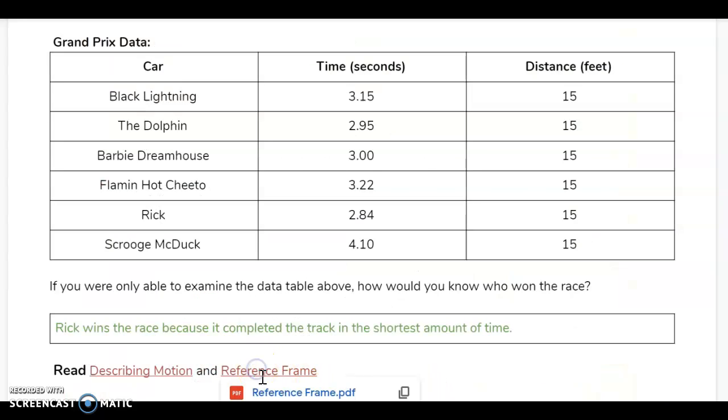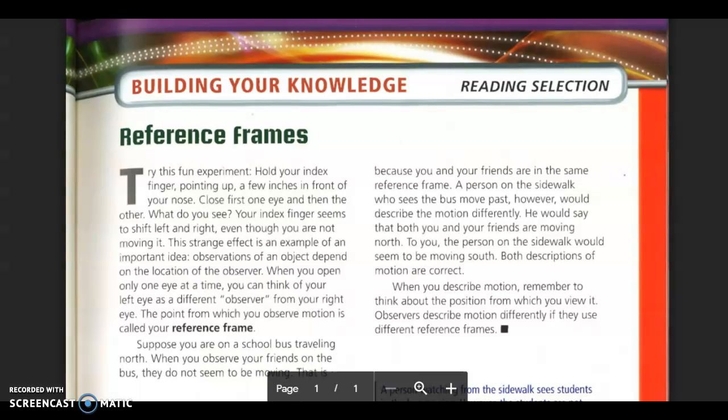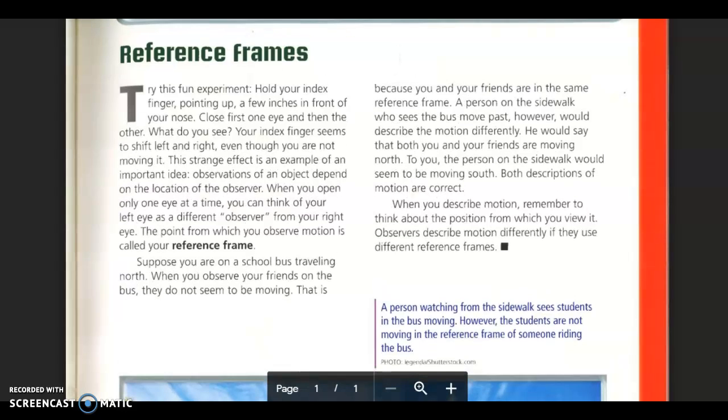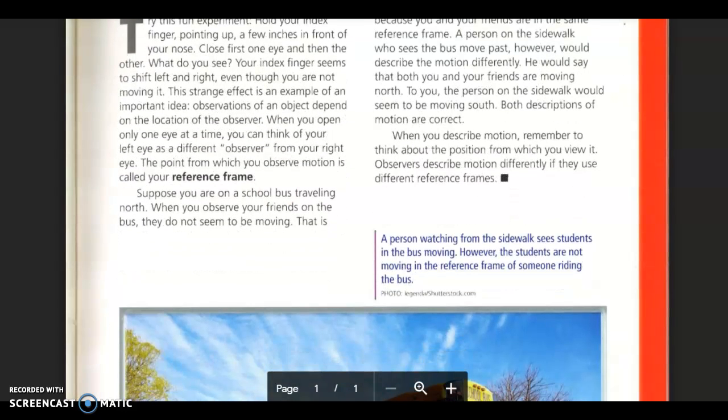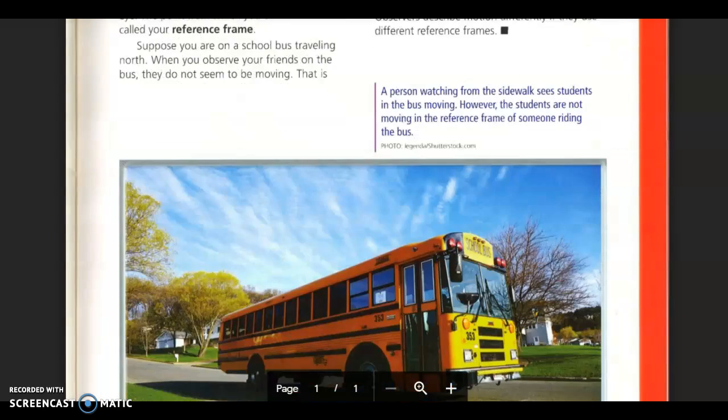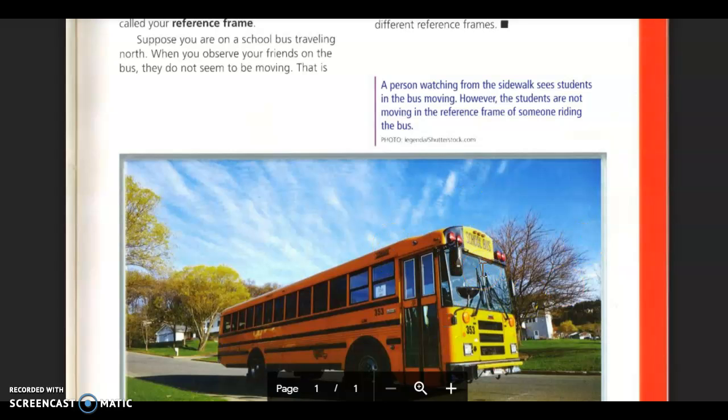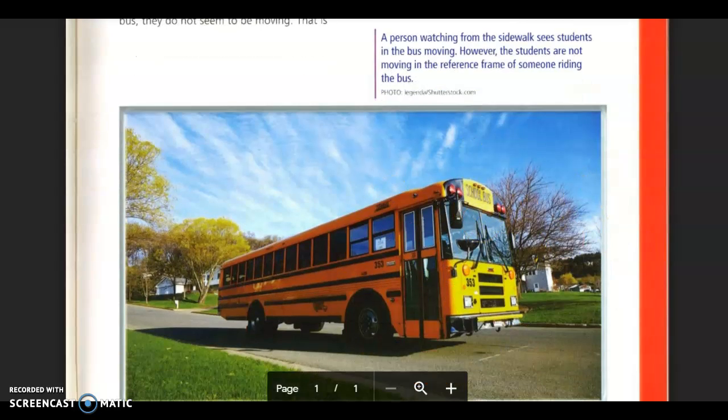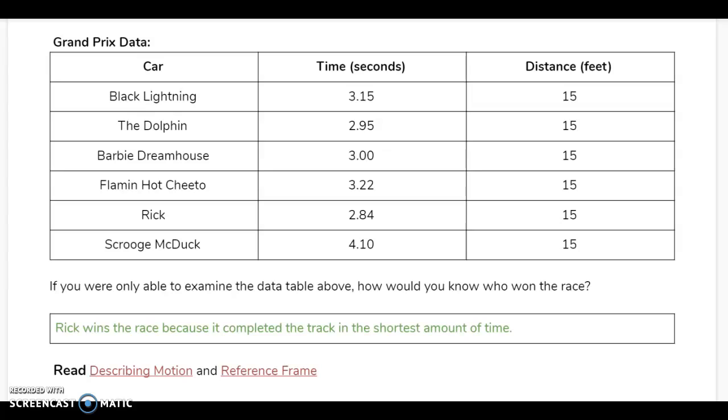The second reading you had to do was all about reference frames. Looking at this reading, it says that the point from which you observe motion is called your reference frame. What that means is if you have a tree in the background of some scenery and a bus passes the tree, you can tell the bus is moving because in relation to the tree you can see the bus change position. That's how we knew that the cars on the track were moving, because we saw the track and in relation to the track that was not moving, the cars were changing position.